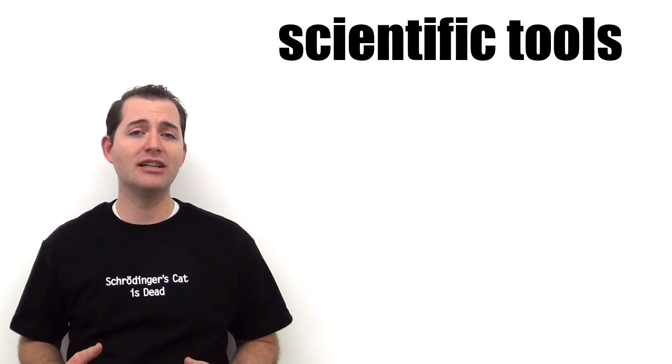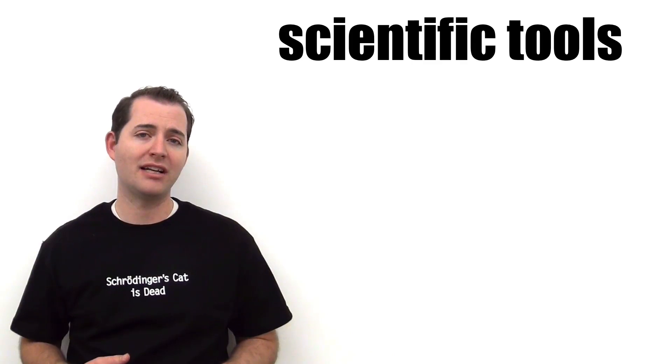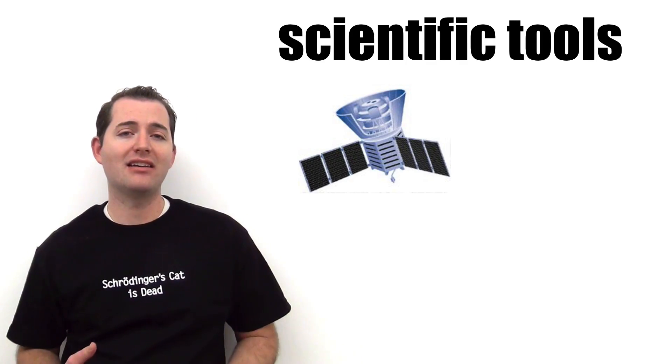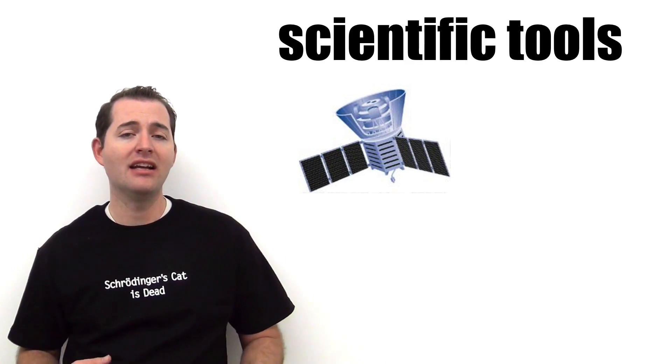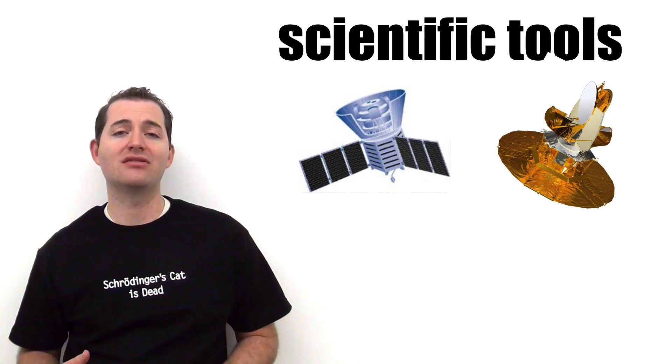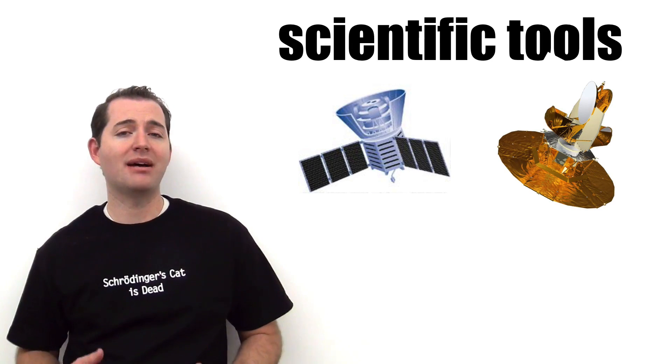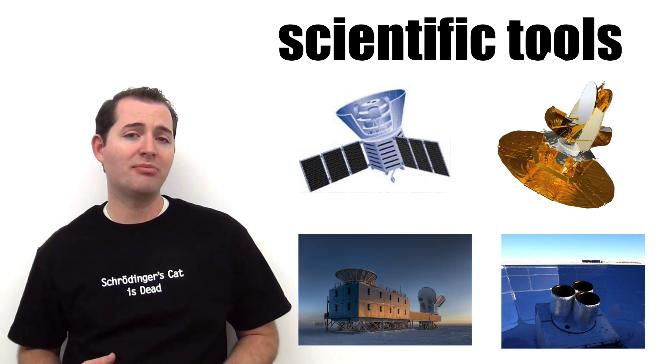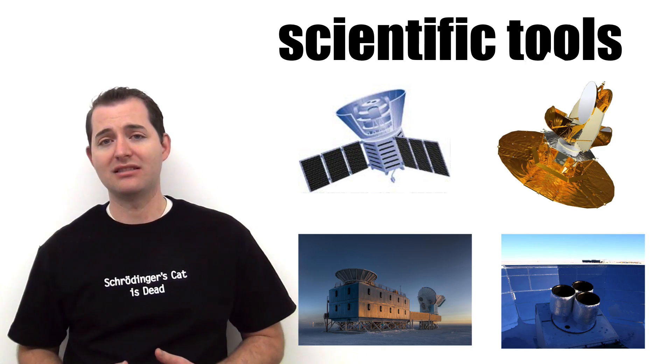There have been many scientists and scientific tools that have been used to research the Cosmic Microwave Background Radiation. Some of the most notable are the COBE satellite, first launched in 1990, the WMAP satellite from 2001, and the ground-based Bicep and Keck arrays, which are based in the South Pole, which started in 2006.